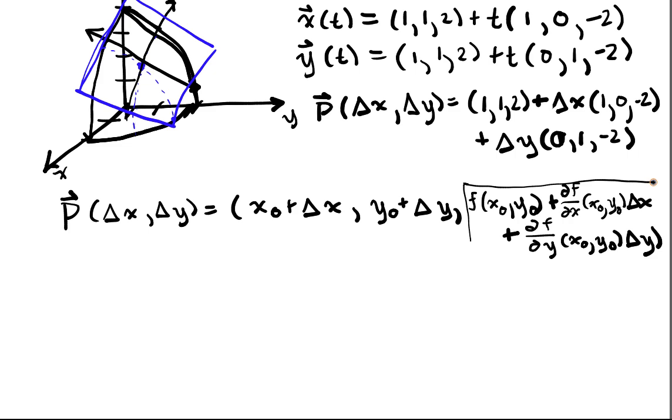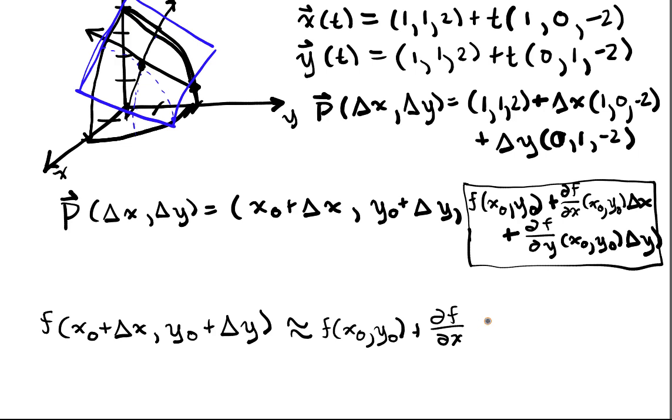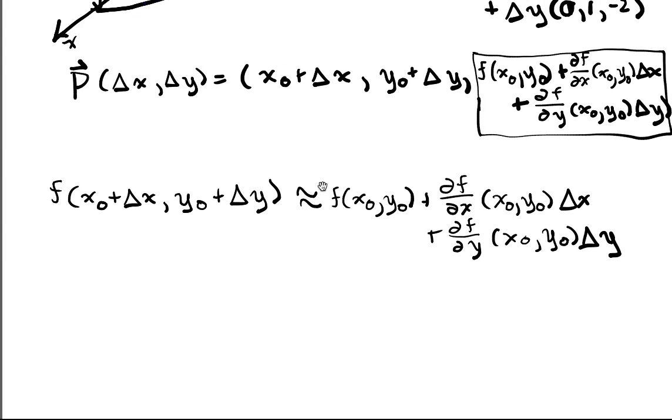So we can say that f of x-naught plus delta x, y-naught plus delta y is approximately f of x-naught, y-naught. That is, we put that point in, plus df/dx, x-naught, y-naught, delta x, plus df/dy, x-naught, y-naught, delta y. So that's a nice, very, very clean approximation. And we can just plug in numbers to do that.